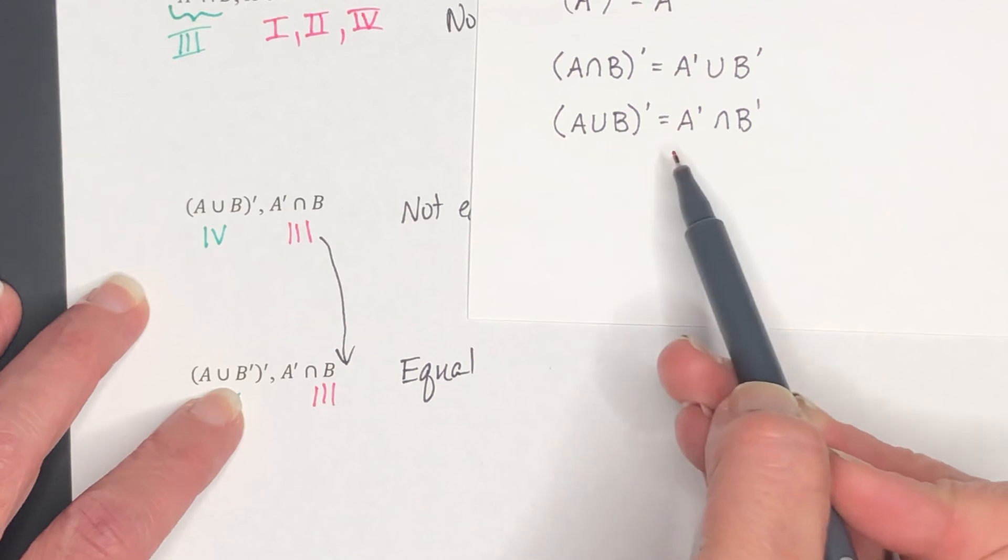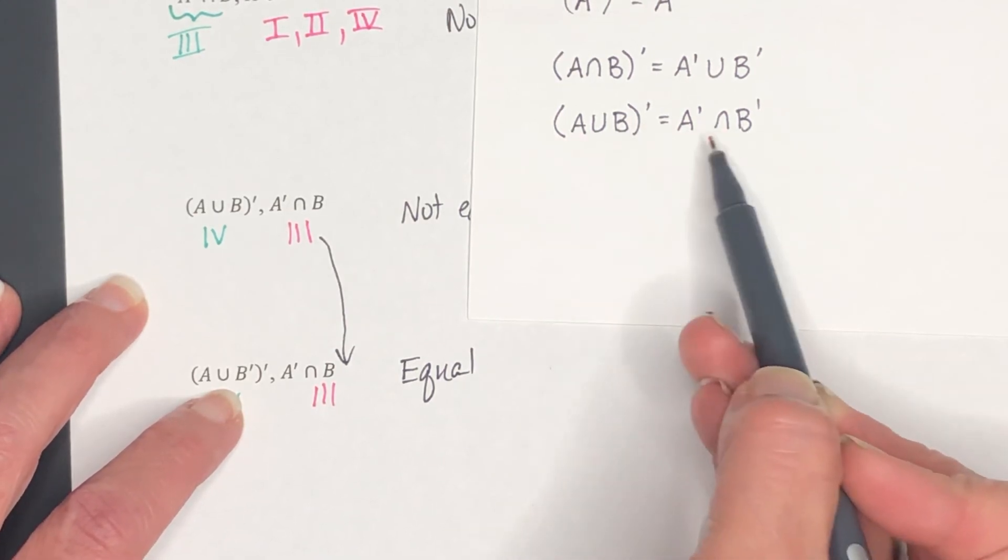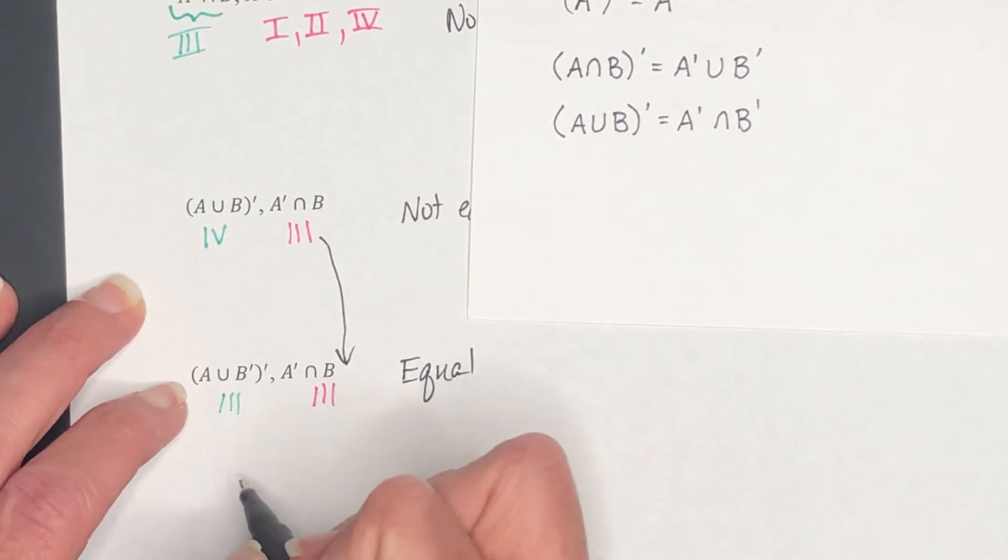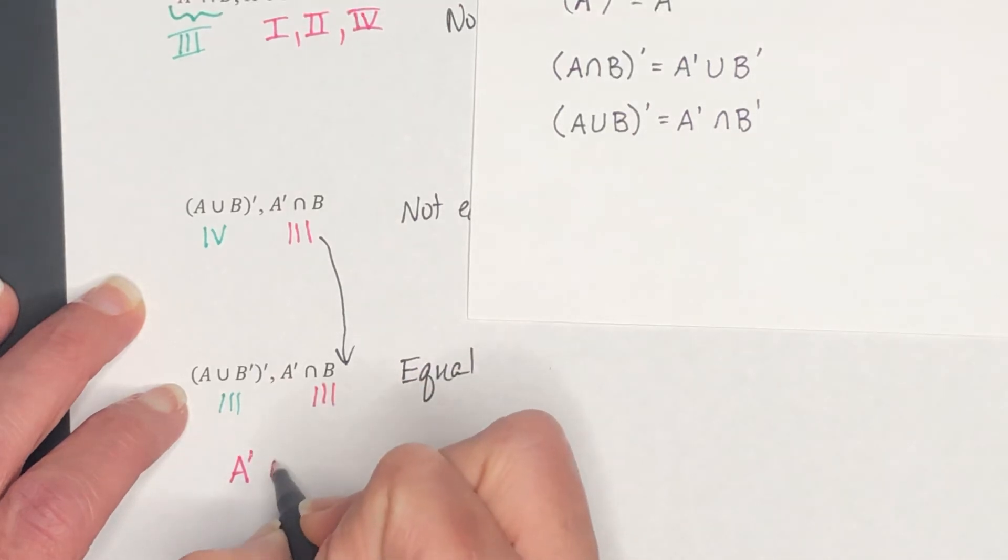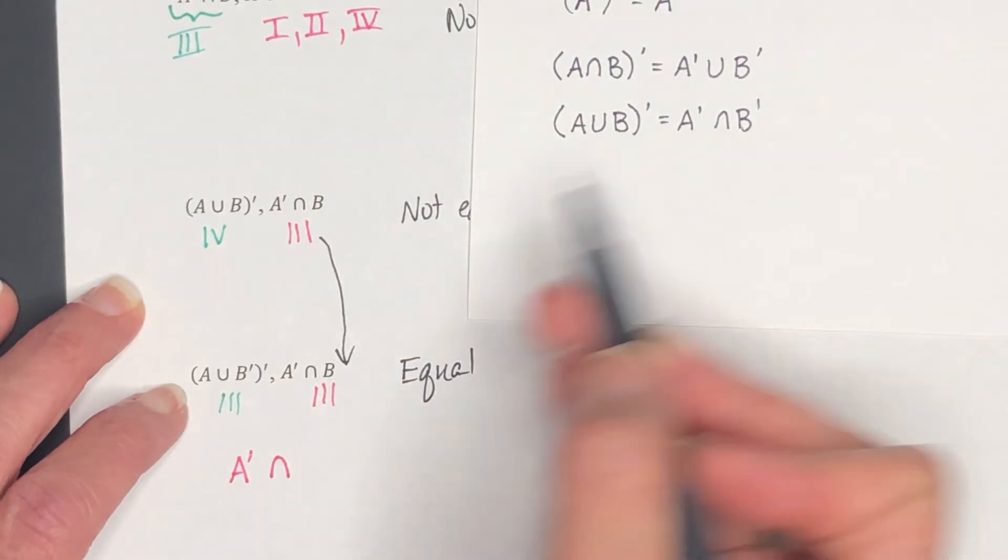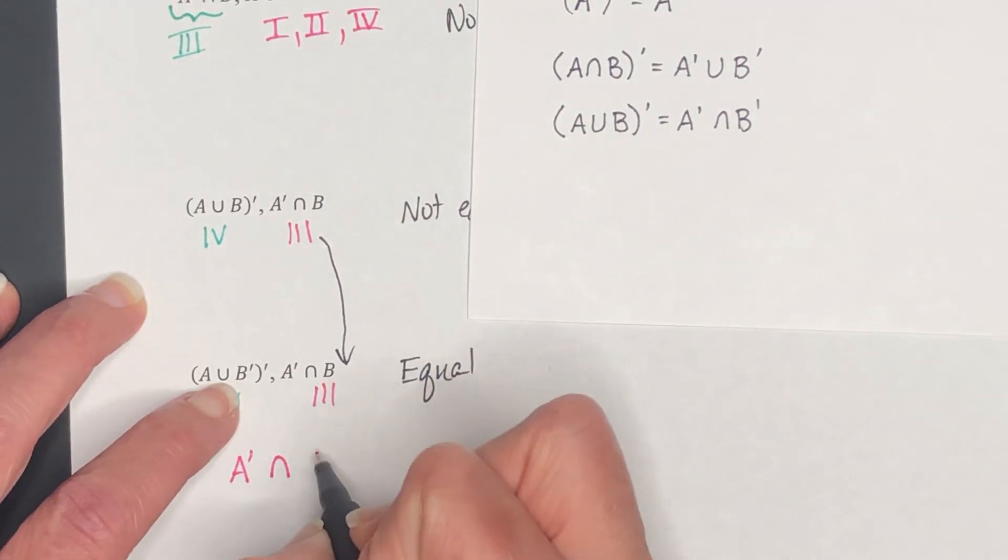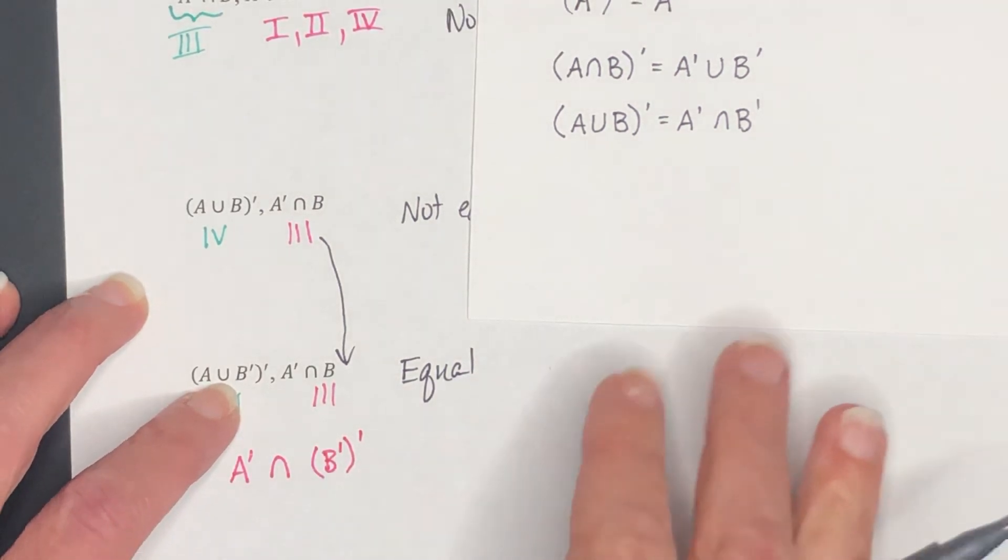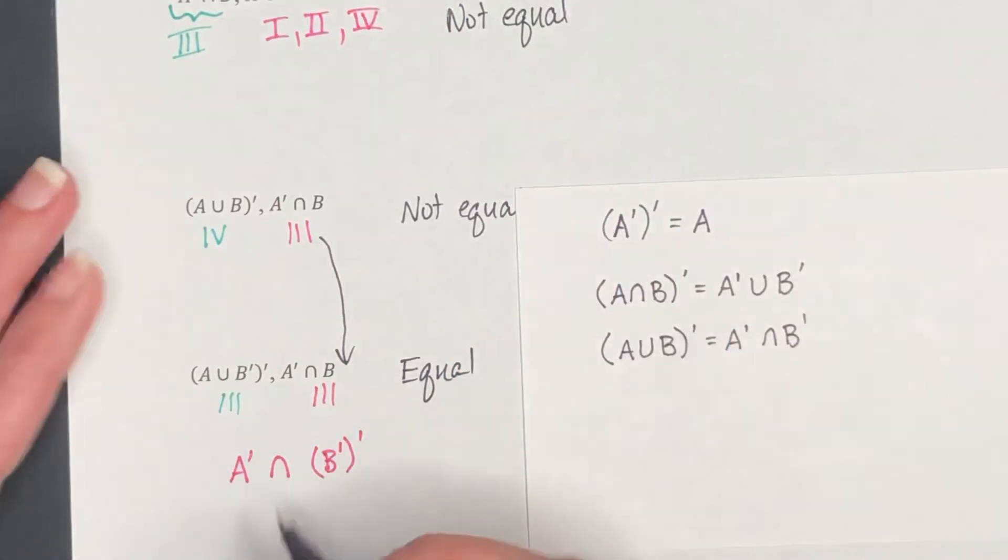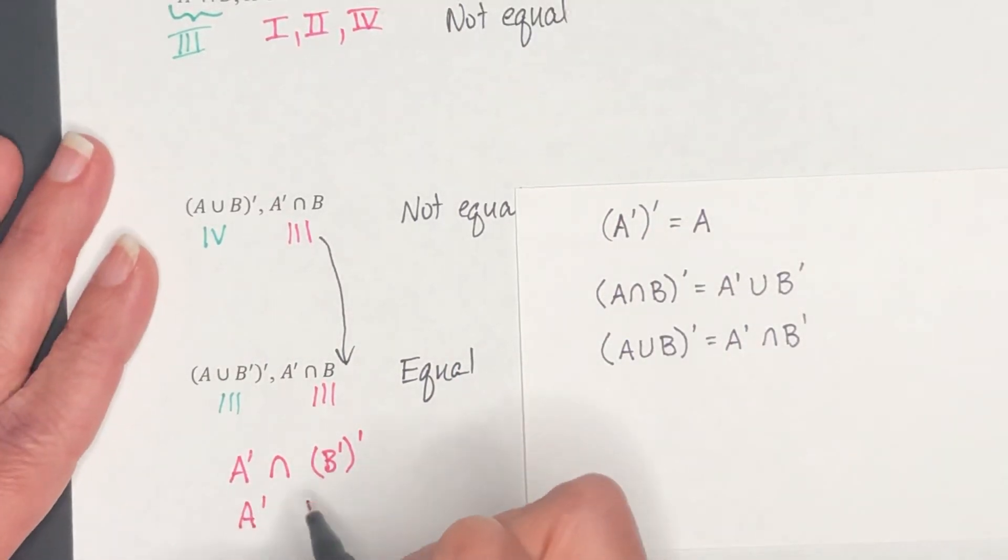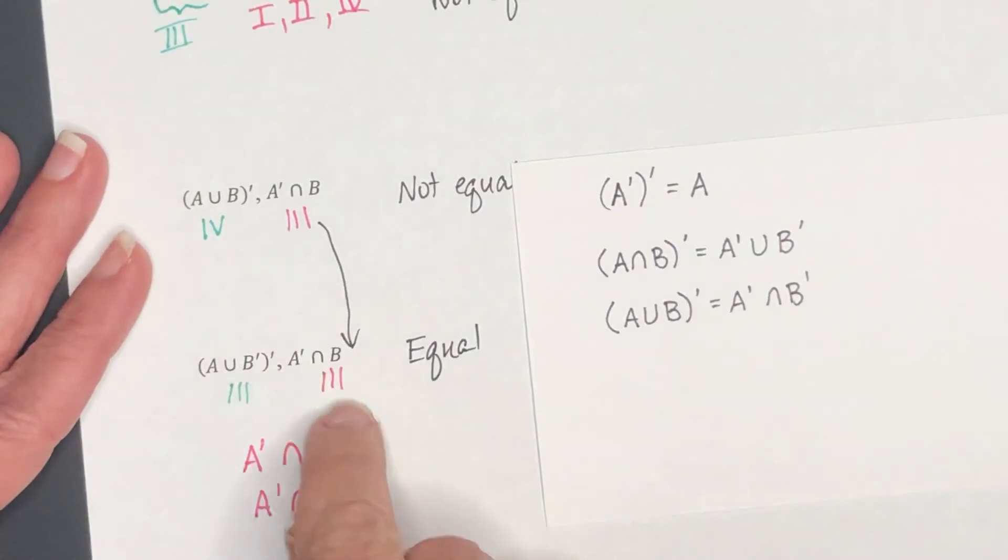And if I'm following the pattern, this says I take the complement of the first one. So A complement. It becomes intersection. And then you take the complement of the second one. So that would be B complement, complement. Double complement becomes the regular. So this is A complement intersected with regular B, which is exactly what I have right there.